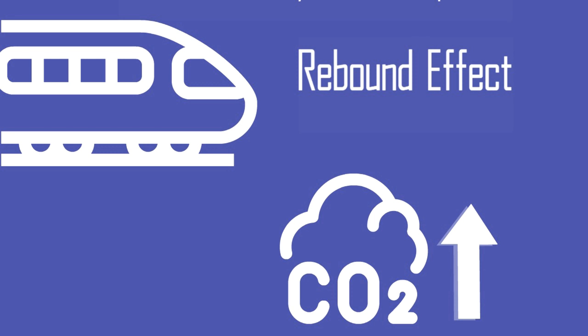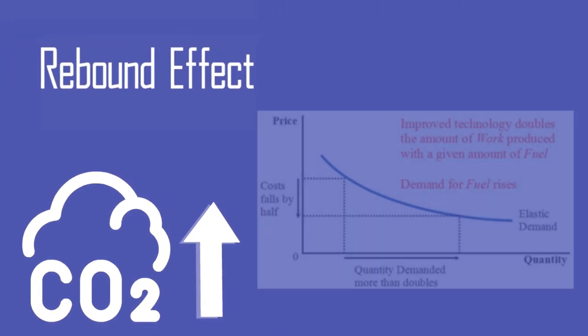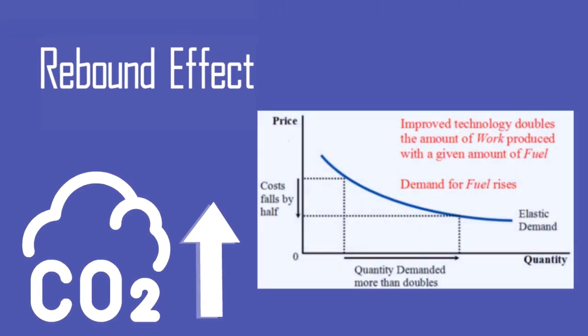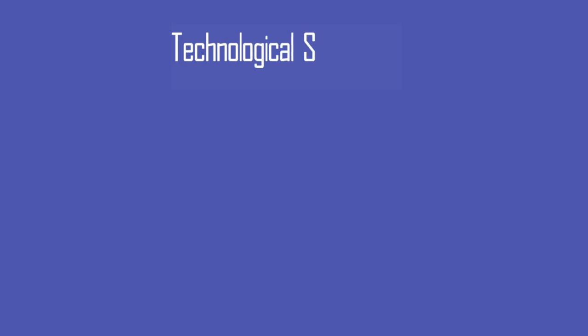This behavior is also termed the rebound effect — the reduction in expected gains from new technologies that increase the efficiency of resource use, because of behavioral or other systematic responses. A good example is that a five percent improvement in vehicle fuel efficiency does not result in a five percent drop in fuel use; it only results in a two percent drop. The missing three percent is consumed by driving faster or further than before. Having looked at the social response to technology, let's now look at the ultimate pitfall of technology: singularity.